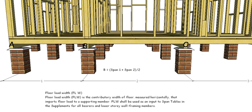For Pier B, it's now going to be carrying half of the floor on this side and half of the floor on this side. So in this case it's span 1 plus span 2, divided by 2 to get half of each. That will give us the Floor Load Width for B.